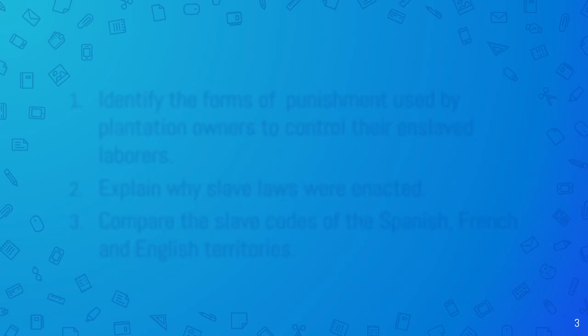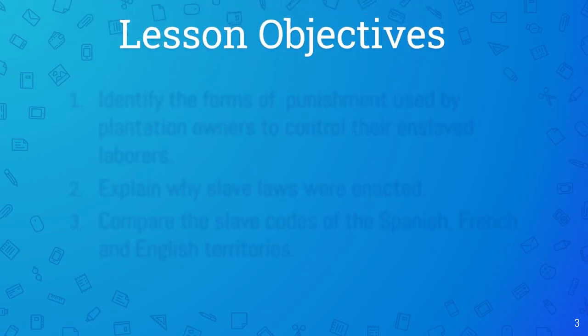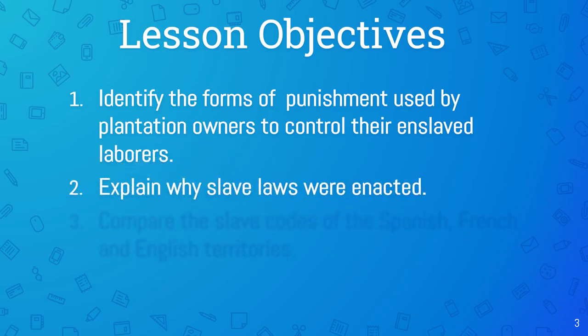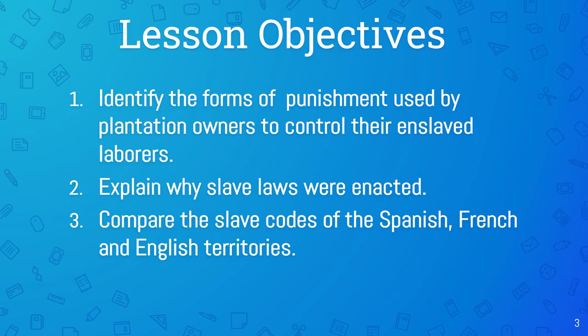Our lesson objectives: firstly, we're going to identify the forms of punishment used by plantation owners to control their enslaved laborers. We are going to explain why slave laws were enacted. And then we're going to compare the slave codes of the Spanish, the French, and the English territories — because slavery existed across European territories throughout the continent.